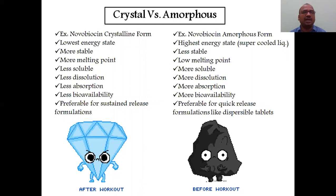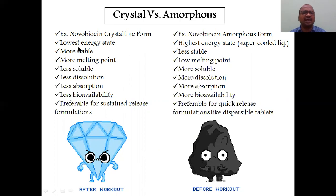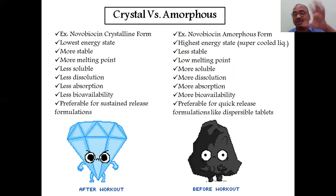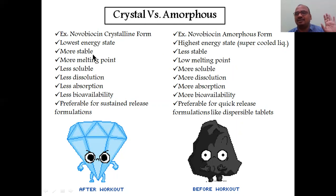Now, the example: novobiocin is available in crystalline form and also in amorphous form. The crystalline form is the lowest energy state — that is a very important point. It is not the highest energy; it is the lowest energy state, and that is why it is more stable.